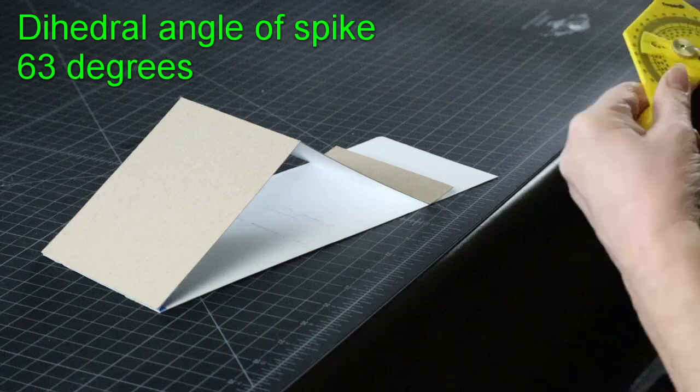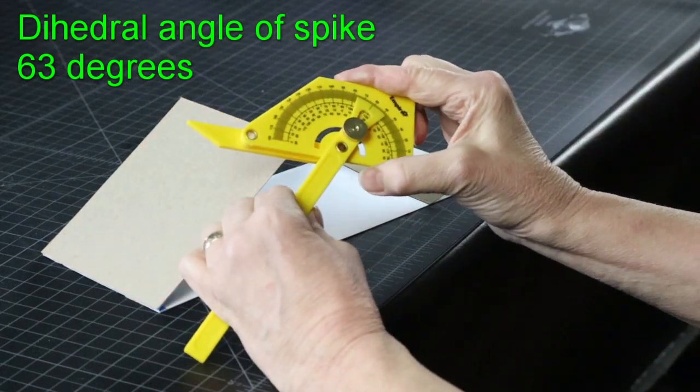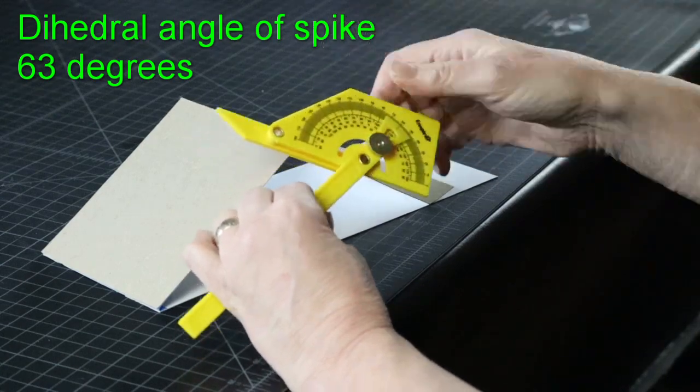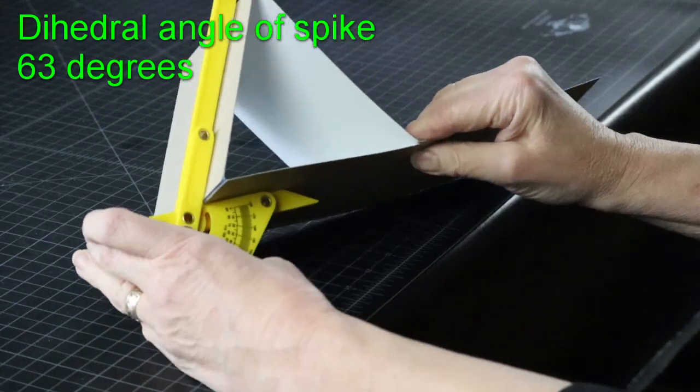Now, armed with that piece of information, I can set my angle jig to 63 degrees. There is a video on how to make this contraption in the description if you missed that episode.